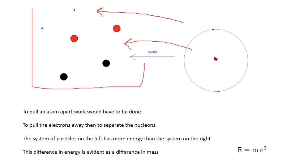That's what E=mc² is all about. If two systems are identical but one has more energy, then it has a bigger mass. Why does it have more energy? Because the particles in this system have got negative potential energy, and the particles on the left don't. To pull an atom apart, work would have to be done — to pull the electrons away and then to separate the nucleons. So the system of particles on the left has more energy than the system on the right, and this difference in energy is evident as a difference in mass.